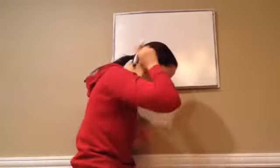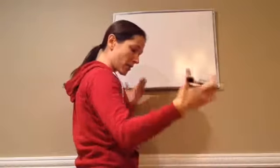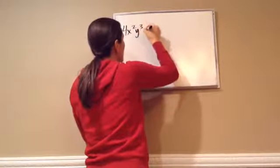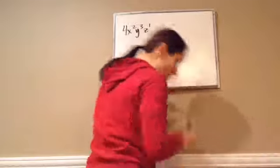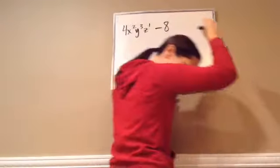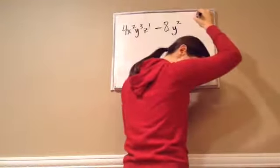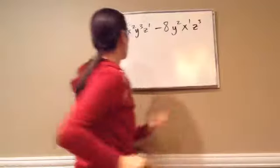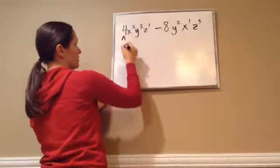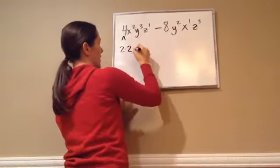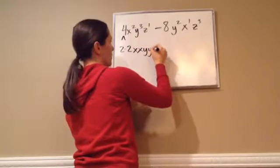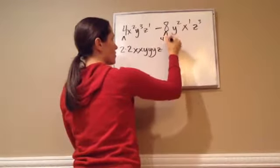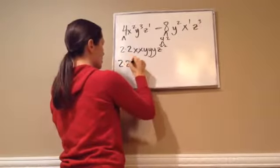All right, here comes another one. Find the greatest common factor of 4x squared y cubed z, and you can put 1 if you want to, minus 8y squared x, and we'll put 1, x to the 4th power, and then z to the 30th. Now, let's break this down. 2 and 2. 2 times 2. x and x, y, y, y, and 1 z.